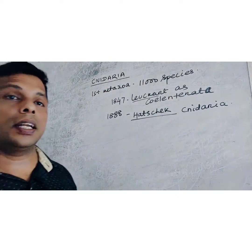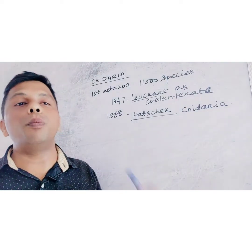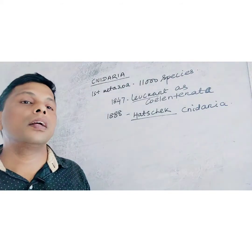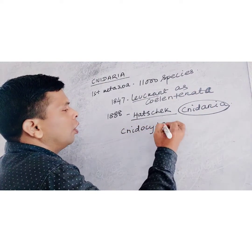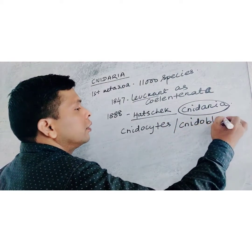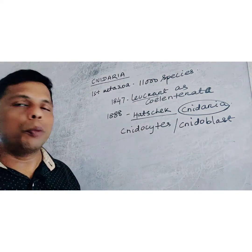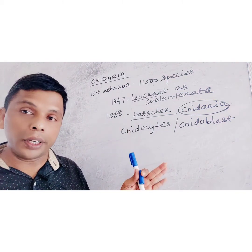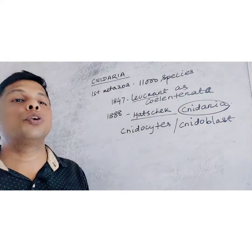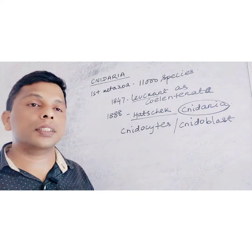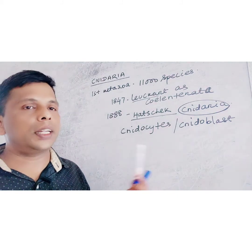Why are these called Cnidaria? The name Cnidaria is derived from nidoblast or nidocyte cells. These are a special type of cells which are derived from the totipotent cells of this phylum. In Porifera, the totipotent cells are archaeocytes; in Cnidaria, the totipotent cells are present in the mesogloea and are called nidoblast cells.